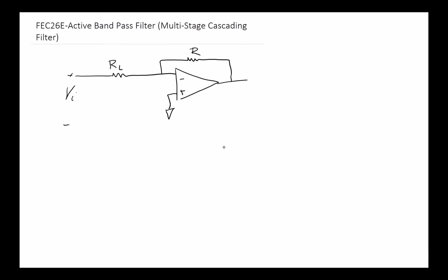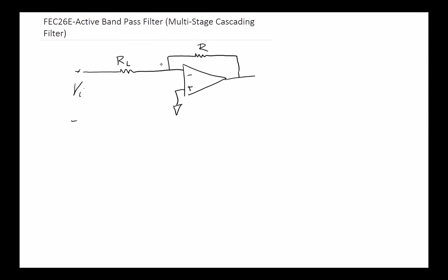Let's get started by drawing a low pass filter that we outlined in an earlier video. We've got Vin coming in to our low pass filter, which will have an RL here and a feedback resistor of the same size to limit the gain to just one.